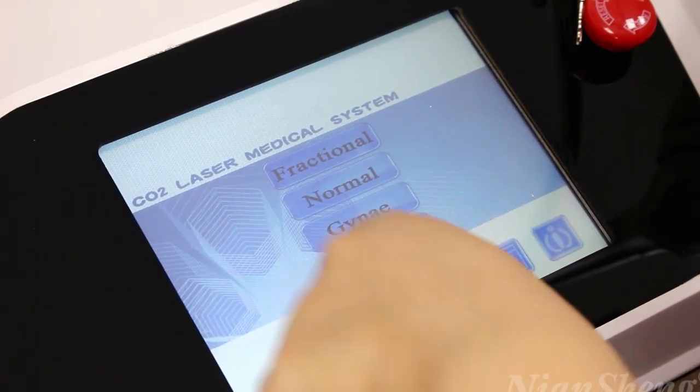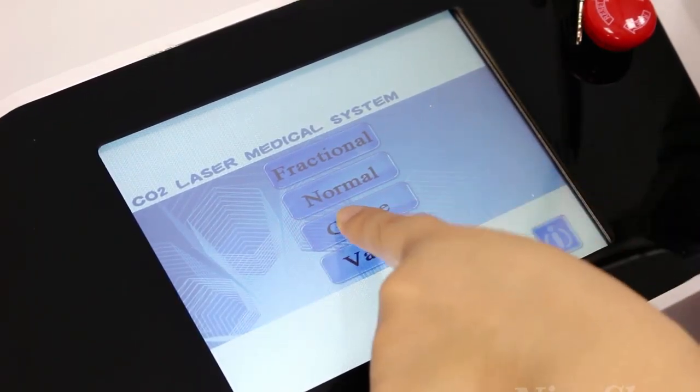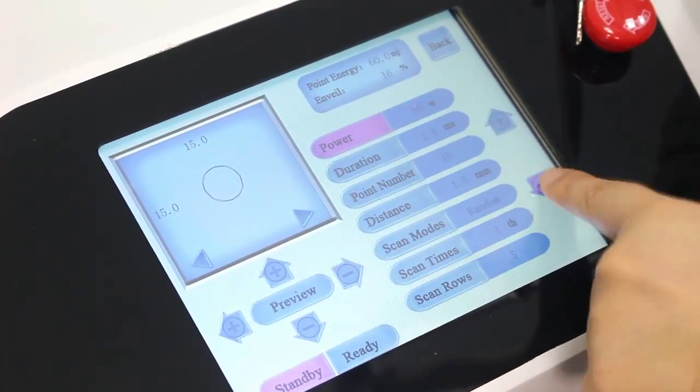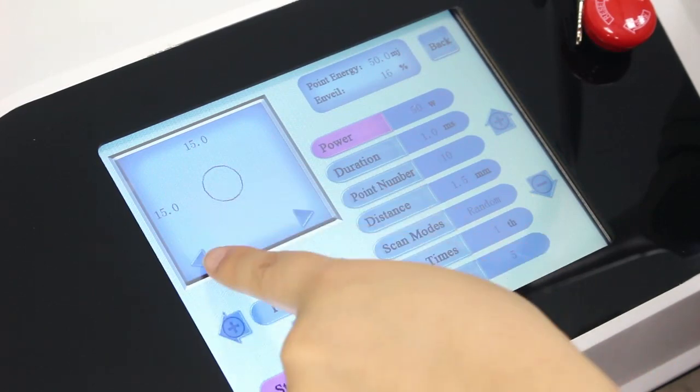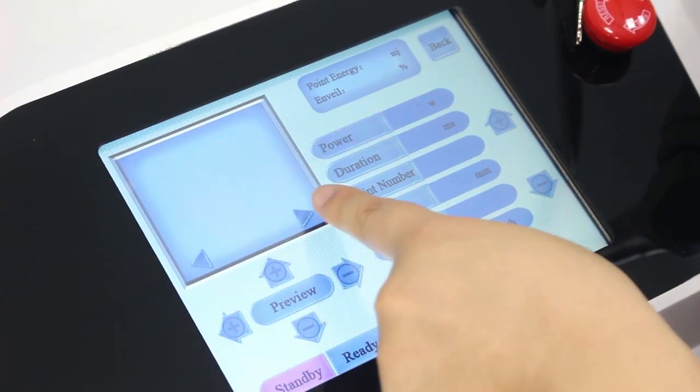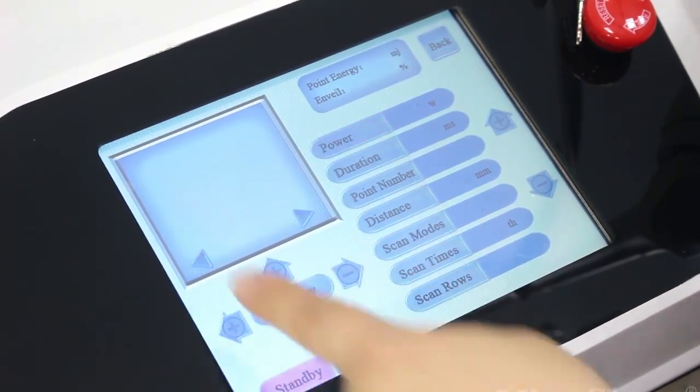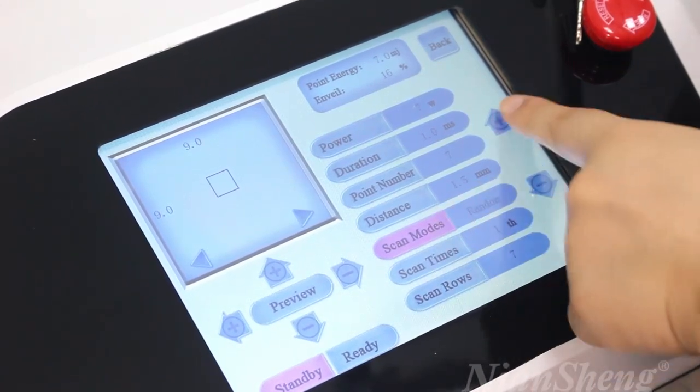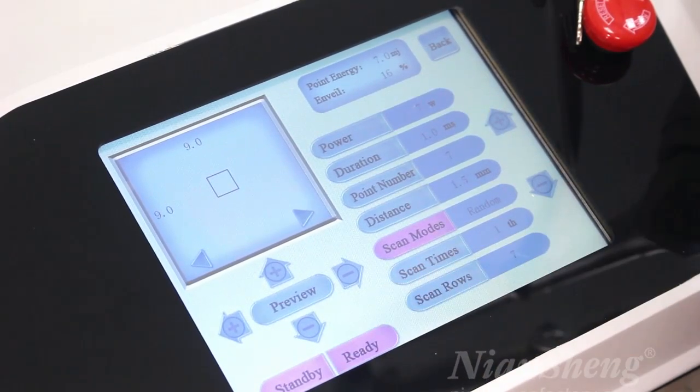The last one is for the vaginal handle. You can adjust the power when you do the treatment. And this one also has different shapes you can choose. The mode you can adjust. Start to do the test.